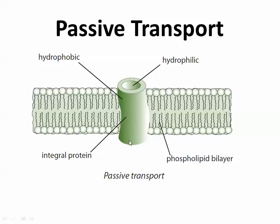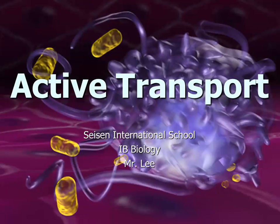Passive transport — osmosis, simple diffusion, and facilitated diffusion — requires no ATP. A good example of why a protein channel helps: glucose is too big and somewhat polar, so the phospholipid tails reject it. The protein channel allows glucose through. The channel's outer surface must be non-polar to fit in the membrane, while the inside must be hydrophilic so that molecules like glucose are attracted through it.